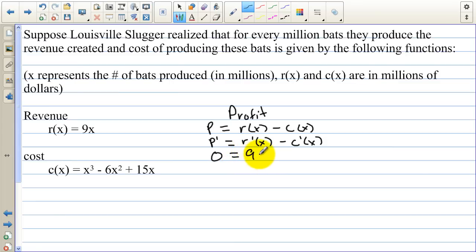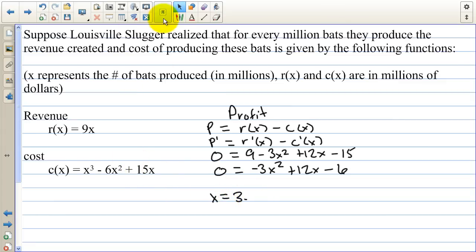So the derivative of r is 9, and the derivative of C is 3x squared. And then when we distribute the negative through, that'll be plus 12x and then minus 15. So our function we want to maximize is negative 3x squared plus 12x minus 6. I'm going to plug this into the quadratic formula and get two values. And when we plug that in the quadratic formula, we get 3.414 and we get x equals 0.586.